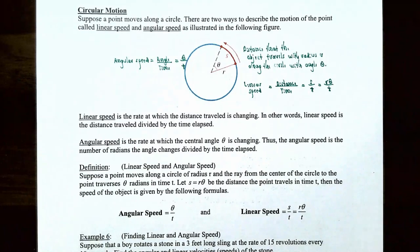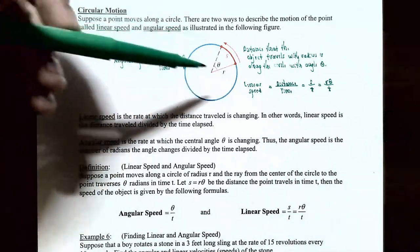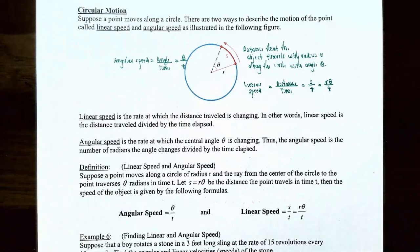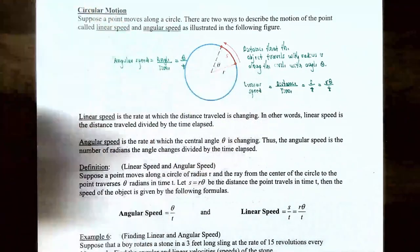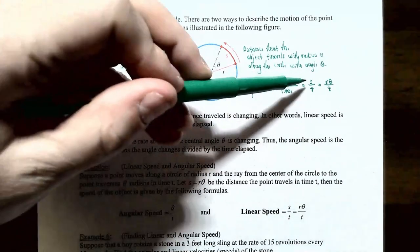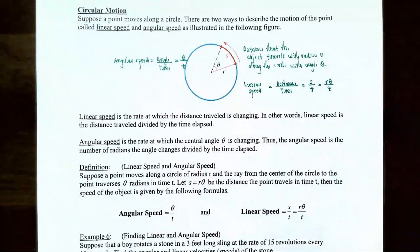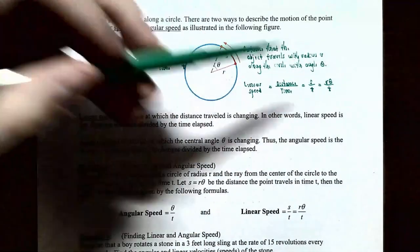Let's finish up by talking about circular motion. Suppose a point moves along a circle of radius r. There are two ways to describe the motion: linear speed and angular speed. The arc length formula is s equals r times theta, where theta is in radians. Linear speed is distance divided by time: v equals s over t equals r times theta over t. Angular speed is the angle in radians divided by time elapsed.